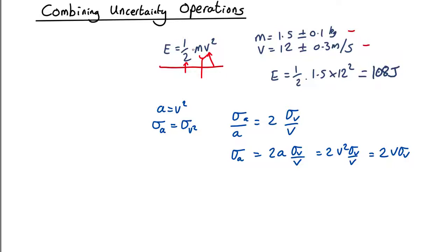Now how about mv squared? I'm going to define another dummy variable. B equals mv squared, which is the same thing as m a.